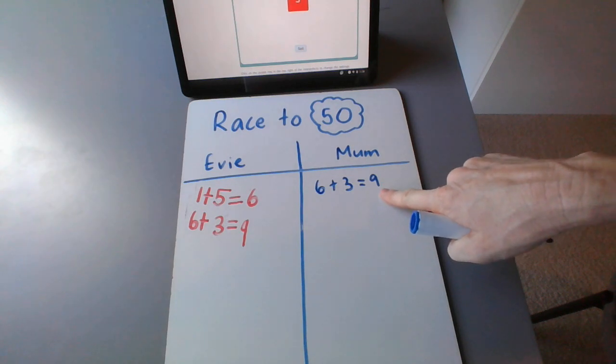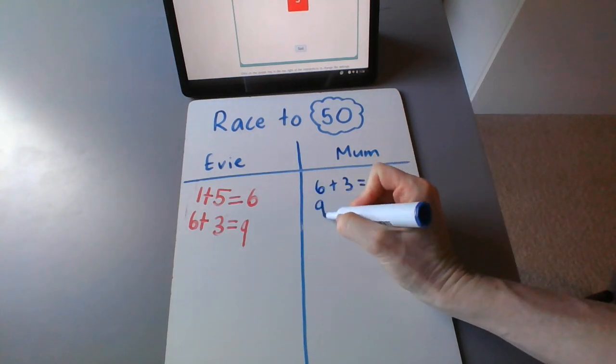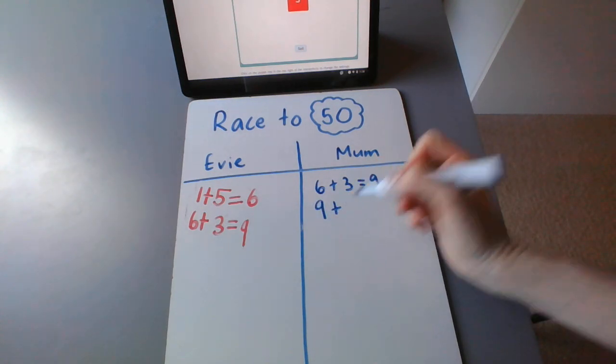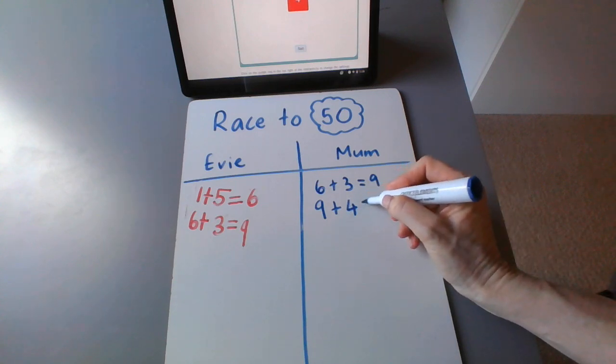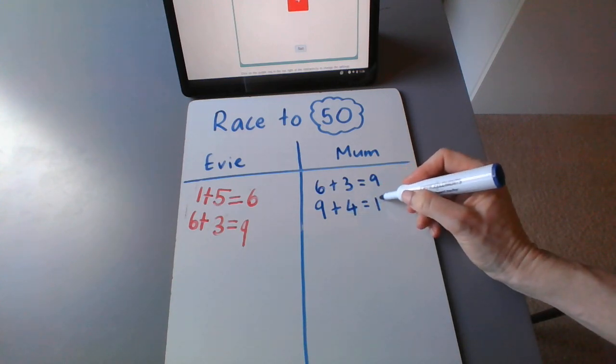All right. I'm going to use my last answer and move it down underneath because I know that's going to start my next sum. We're going to build up on our answers. So nine plus four. I know nine plus four is 13.